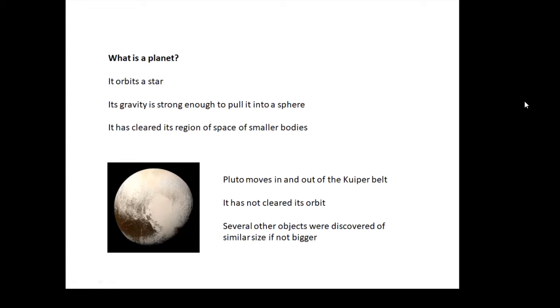So anything smaller in its orbit, it has swept away or absorbed—it has cleared its region of space. Now Pluto isn't a planet. It used to be but it isn't anymore. It's a dwarf planet, or you can say it's a Kuiper belt object because it basically spends most of its time in the Kuiper belt, so it hasn't cleared its orbit because there are lots of other bits and pieces around it.